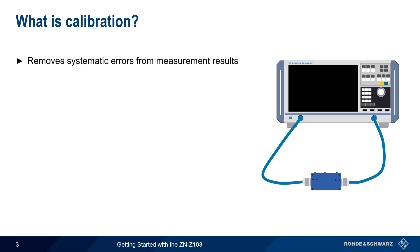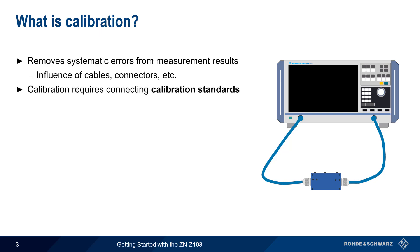Calibration is a process by which systematic errors are removed from measurement results. Examples of systematic errors are things such as the influence of cables, connectors, etc. The calibration process requires the use of calibration standards.